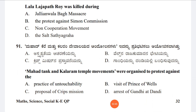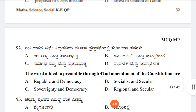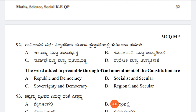Question 91: Mahad Tank and Kalaram Temple movements were organized to protest against Option A: Practice of untouchability, Option B: Visit of the Prince of Wales, Option C: Proposal of Cripps Mission, Option D: Arrest of Gandhi. The answer is Option A, the practice of untouchability.